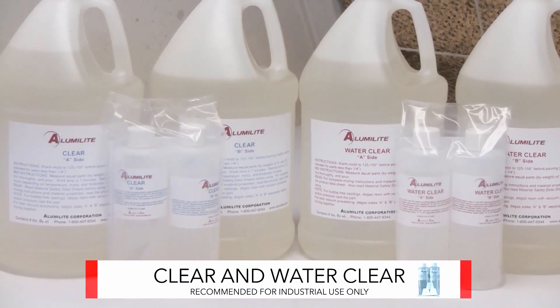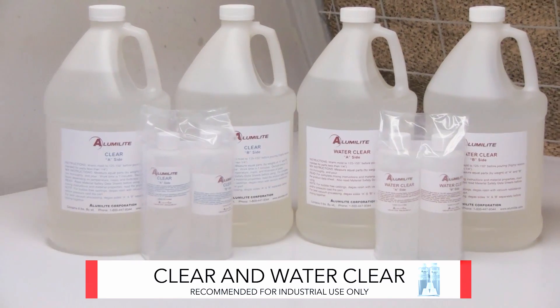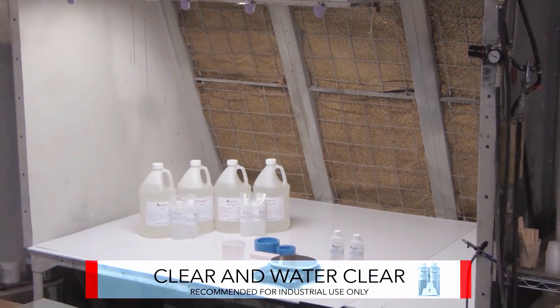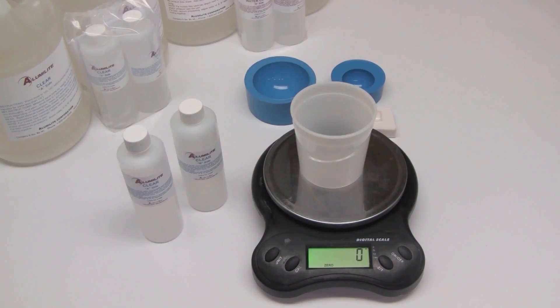Alumalite Clear and Alumalite Water Clear are two-part casting resins that produce optically clear castings. In this demonstration we're going to show you how to mix both of these systems by weight.